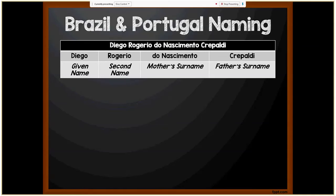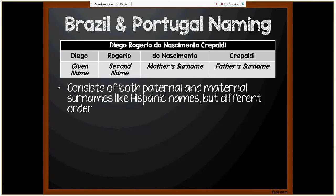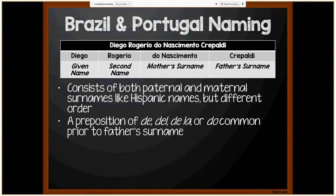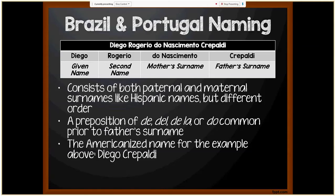Now we'll cover Brazil and Portuguese naming. In the example Diego Rogerio Donocemento Crepaldi: Diego is the given name, Rogerio is the second name, Donocemento is the mother's surname, and Crepaldi is the father's surname. Like Hispanic naming it includes both paternal and maternal surnames, but in different order — mother's name first, then father's surname. You may also see prepositions de, del, de la, or do before the father's surname. Brazilian Portuguese students tend to Americanize their names, so Diego's Americanized name would be Diego Crepaldi.